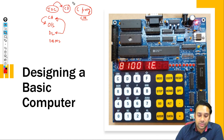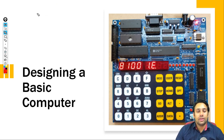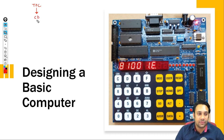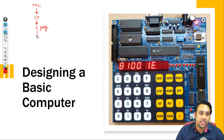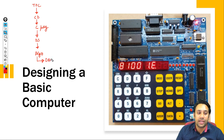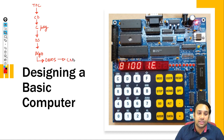Aur compiler design ko padhne ke liye aapko theory of computation aana chahiye. And if you know how the compiler works, then you will get better clarity regarding C programming. Agar aapko pata hai ki C programming kaise kaam karti hai, then you will get better clarity regarding data structures. And if you know how data structures work, you get better clarity on algorithms, then on DBMS, and then on computer networks.